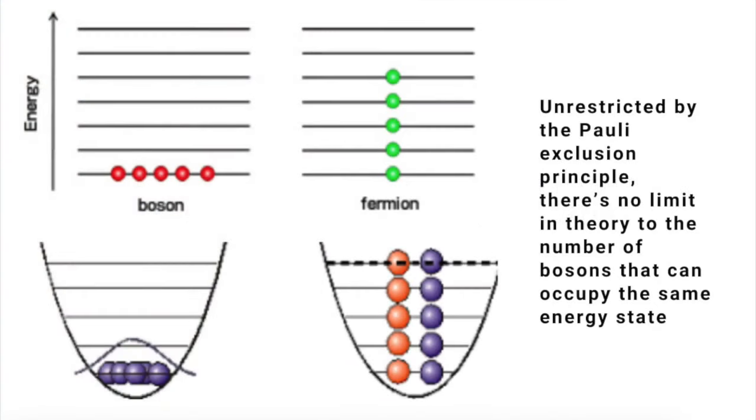Bosons don't obey the Pauli exclusion principle. This means that there's no limit to the number of bosons that can occupy the same point in space at the same time. So for example, there's no limit in theory to the brightness of a beam of light.